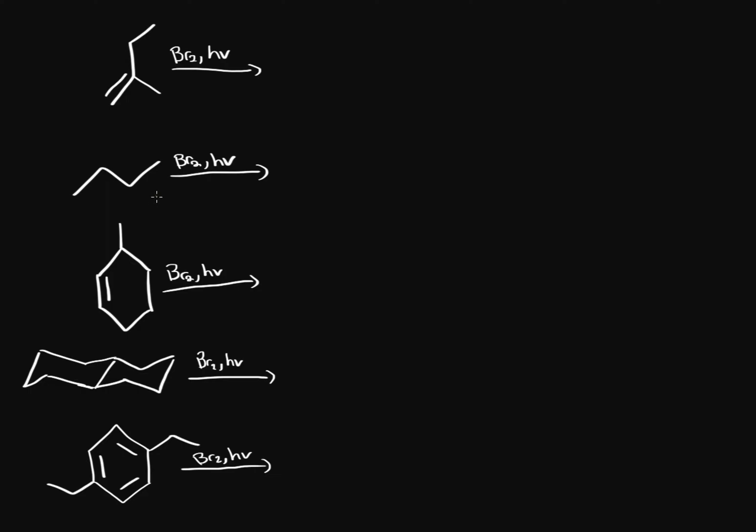In this example, we're going to look at the monobromination products for each of these reactions. The thing to consider with monobromination is that it is highly selective. The first rate-limiting step of bromine is endothermic, so it will only go to the most stable position.